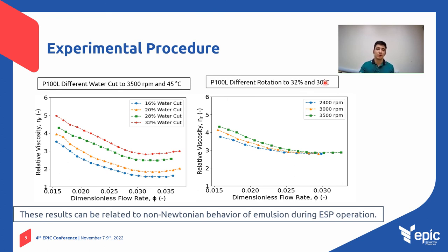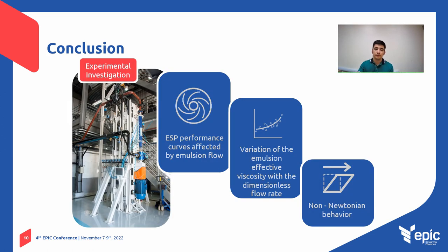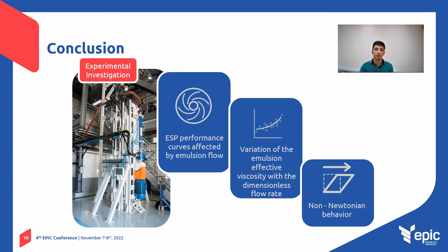The decrease of these parameters refers to flow rate reduction or increase of ESP rotational speed. An ESP performance analysis was carried out operating with unstable water-oil emulsion. A viscous head degradation was exacerbated due to the effective viscosity of the emulsion, and non-Newtonian behavior was evidenced within the ESP.